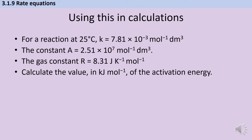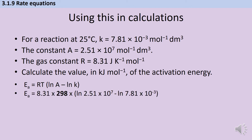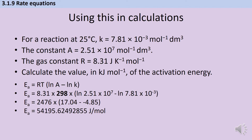In the second question we have a very similar format, but now the temperature is given in degrees C, so before substituting numbers in, convert to Kelvin by adding 273. So we have 8.31 times 298, multiplied by the natural log of A take away the natural log of K. Again, we get a similar size number for the natural log of A and a negative number for the natural log of K. When multiplied together, we get a similar size answer, and then divide by 1,000 to convert to kilojoules per mole and give the answer to three significant figures.